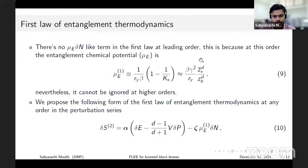At the leading order this quantity is actually of the order 1 over z_h to the power d. So a term like mu delta N is of the order 1 over z_h to the power 2d and it cannot contribute at the leading order. Nevertheless its contribution should not be ignored at higher orders.